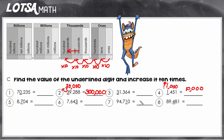Let's do one more example — number eight. We have a four, and it's in the hundreds place, so the value of the four right now is four hundred. But we need to increase it ten times, or make it ten times bigger. We could do four hundred times ten, or we could just remember that every place to the left is ten times bigger. So we can just move this four one place to the left — the four is no longer in the hundreds place; it's going to be in the thousands place. So the value of this four increased ten times is four thousand.